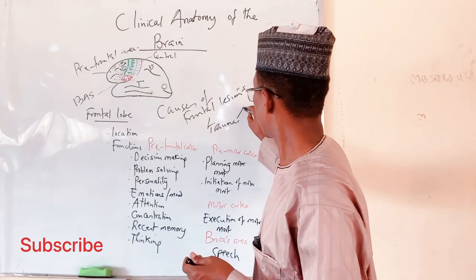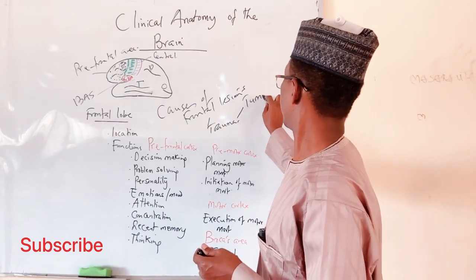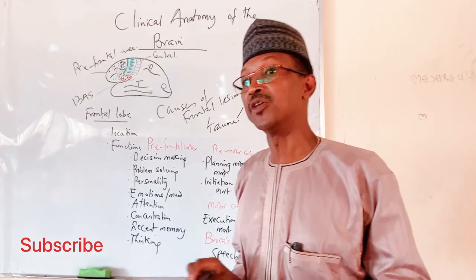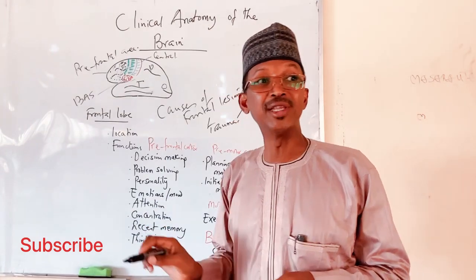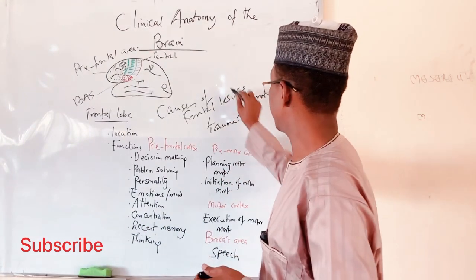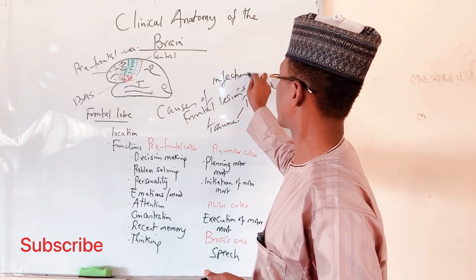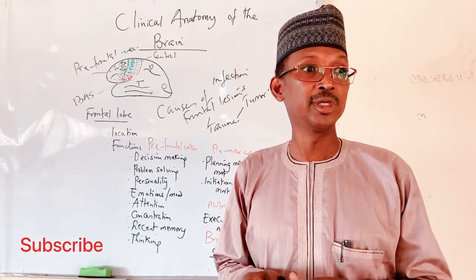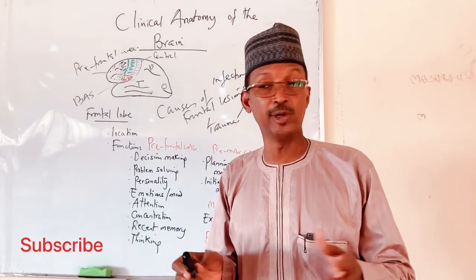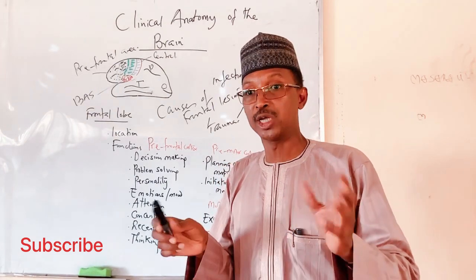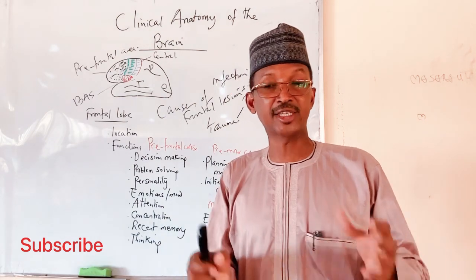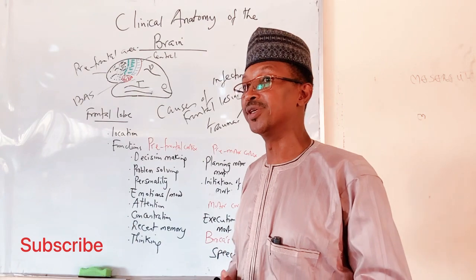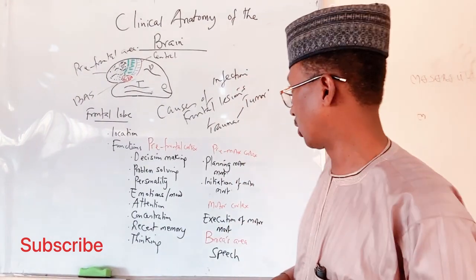Apart from trauma, a tumor — that is, cancer of the brain — can also affect the frontal lobe. Infection, such as meningitis, can also cause injury or lesion of the frontal lobe. Outbreaks of meningitis do occur and can damage this region.